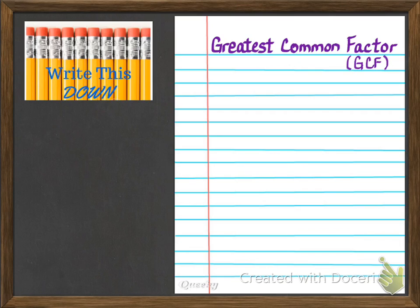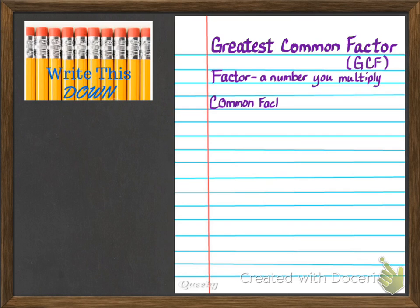Before we can get started on how to find the greatest common factor, we need to make sure that we know what a factor is. A factor is a number that you multiply. A common factor is a number that is a factor of two or more numbers.